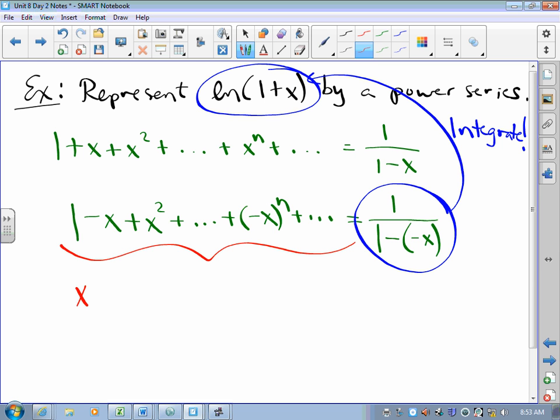We're going to get x minus one half x squared plus one third x cubed and so on. So that the nth term is x^(n+1) over (n+1), but of course there's a (-1)^n involved there, and so on.